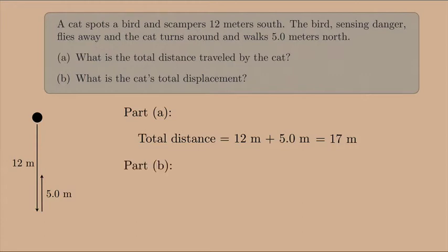For part B, we're looking for the total displacement. And remember, that's the final position minus the initial position. We can also think of this as the distance between where the cat started and where the cat ended, but we also have to remember to include a direction.